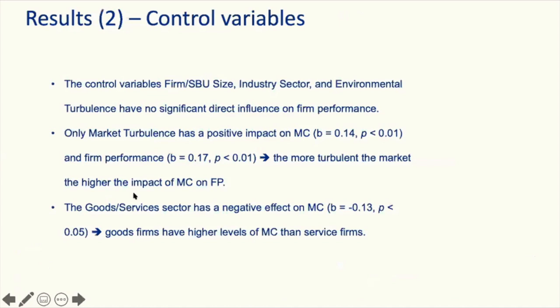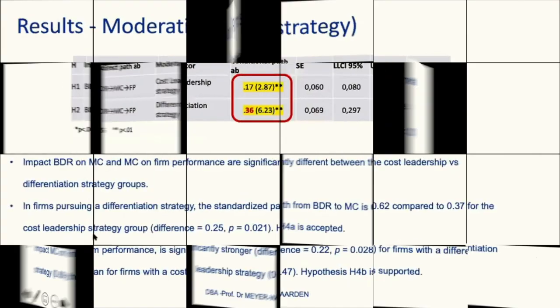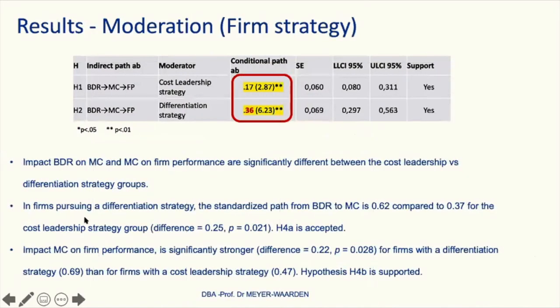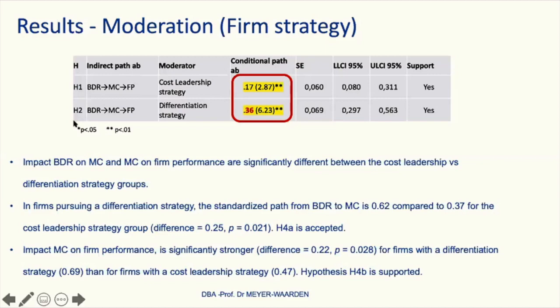CRM is related to big data management and is more important in service firms. For the moderation, firms practicing differentiation have a higher regression coefficient than firms practicing cost leadership — validating our hypothesis that firm strategy moderates the impact. Firms practicing differentiation with stronger customer relationships benefit more from big data management in terms of firm performance than cost-focused firms, because they invest more in relationships and personalization and therefore take greater advantage of big data.